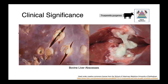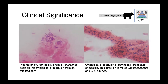Here you can see some images of bovine liver abscesses. These are very common, and you can see the thick, creamy, purulent material within the bovine liver. On the cytology images, you can see Trueperella pyogenes from cattle specimens — these pleomorphic gram-positive rods. The image on the right is actually bovine milk from a case of mastitis, demonstrating that this organism is able to cause infections in a wide variety of anatomical locations.